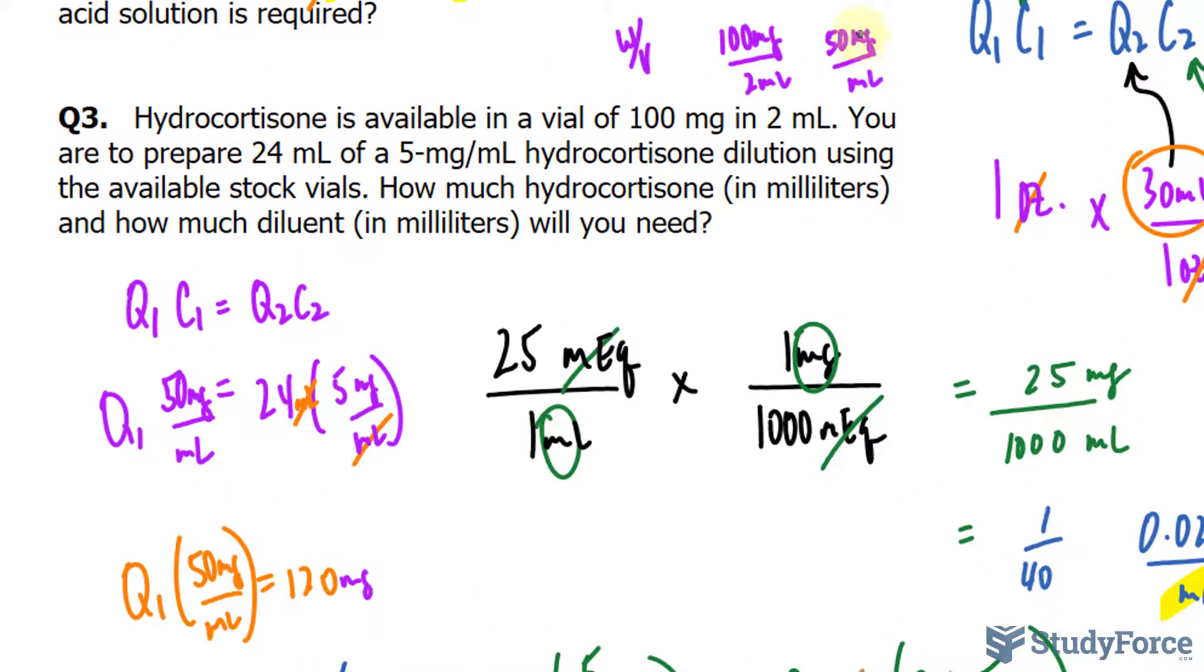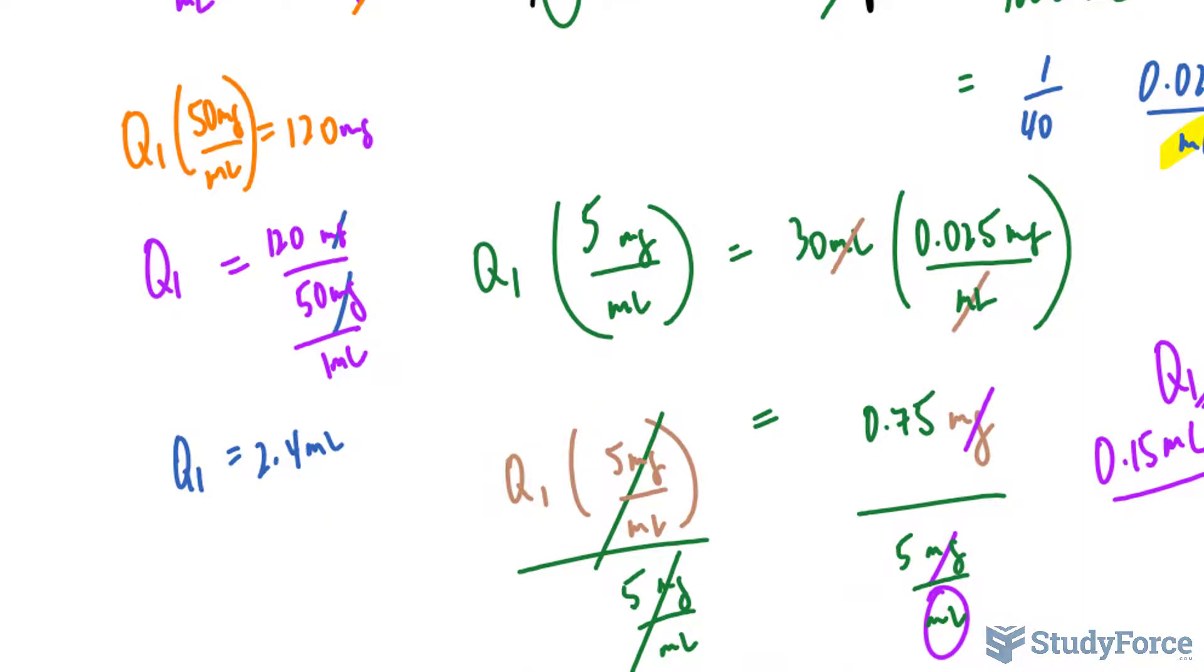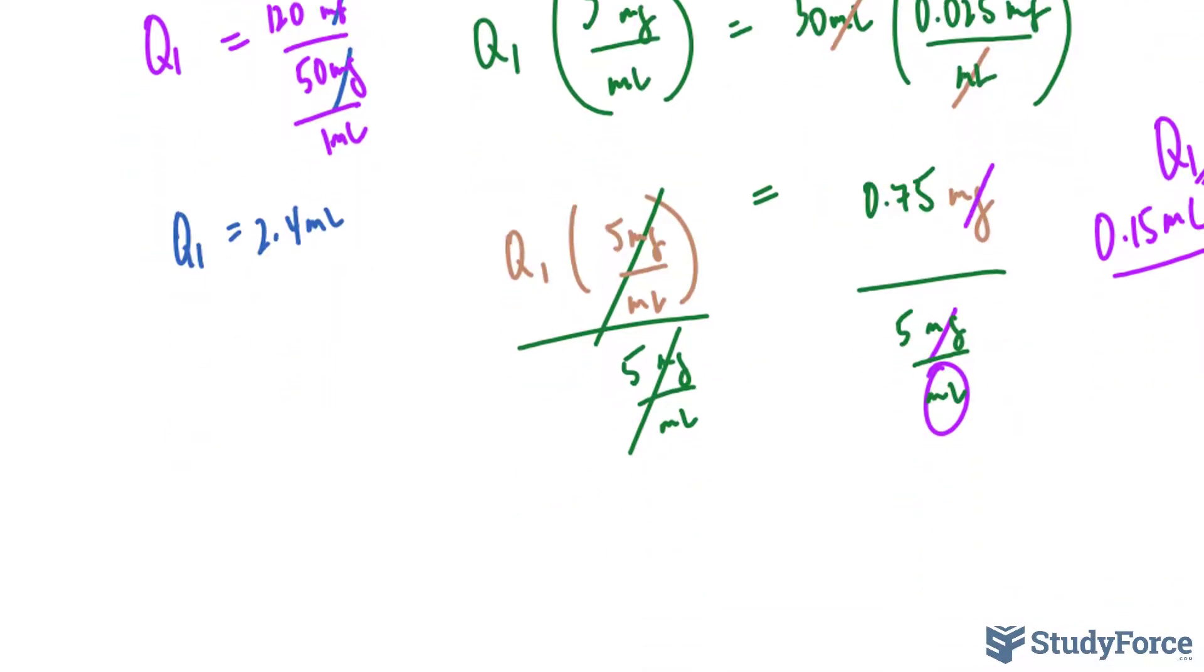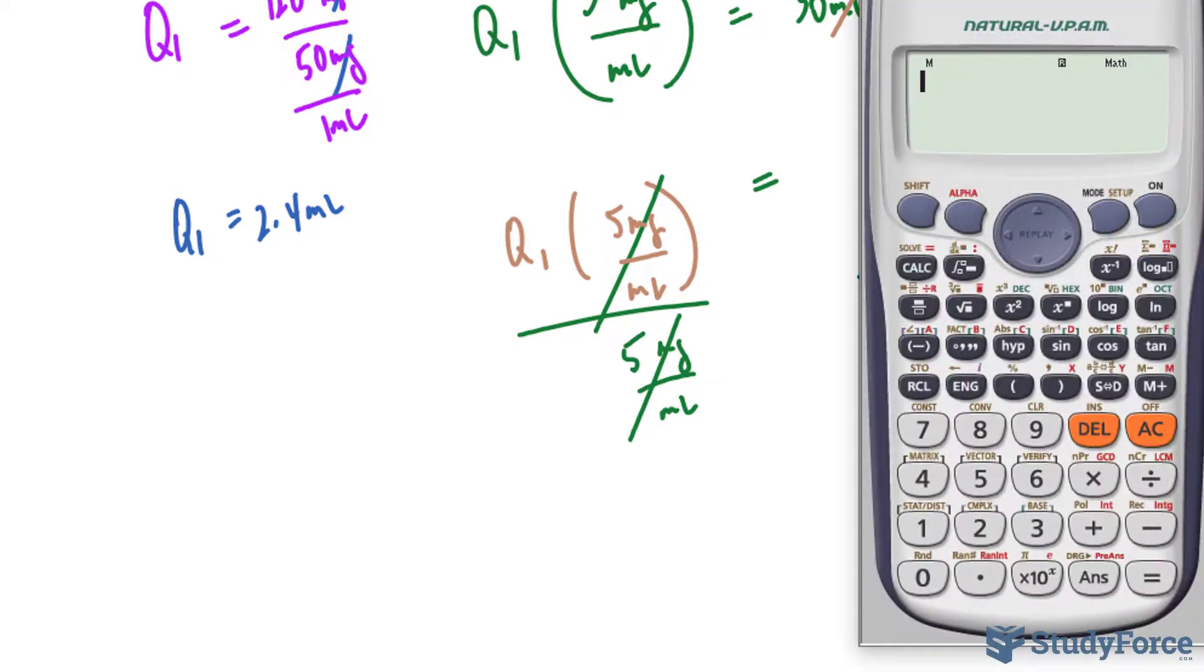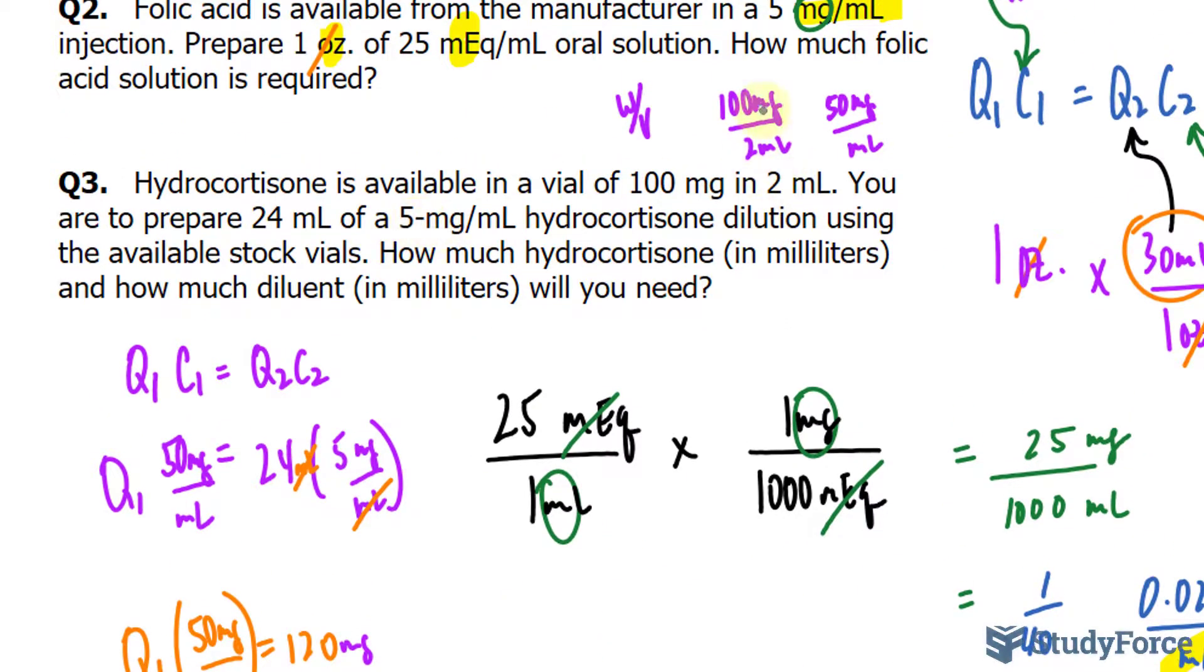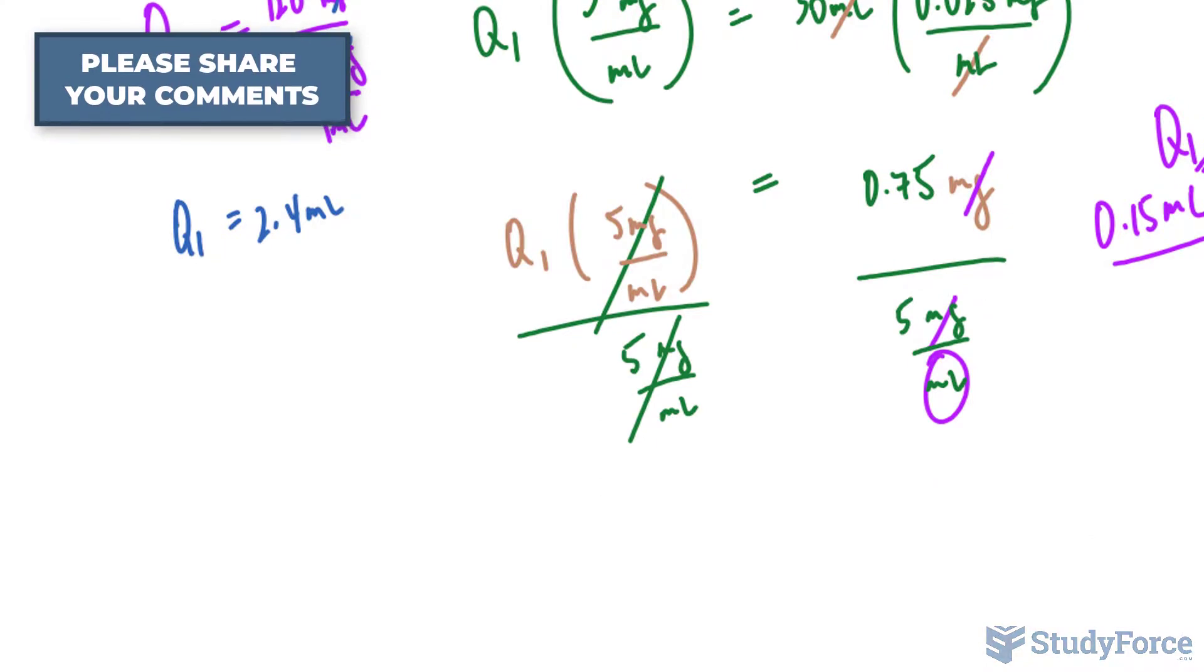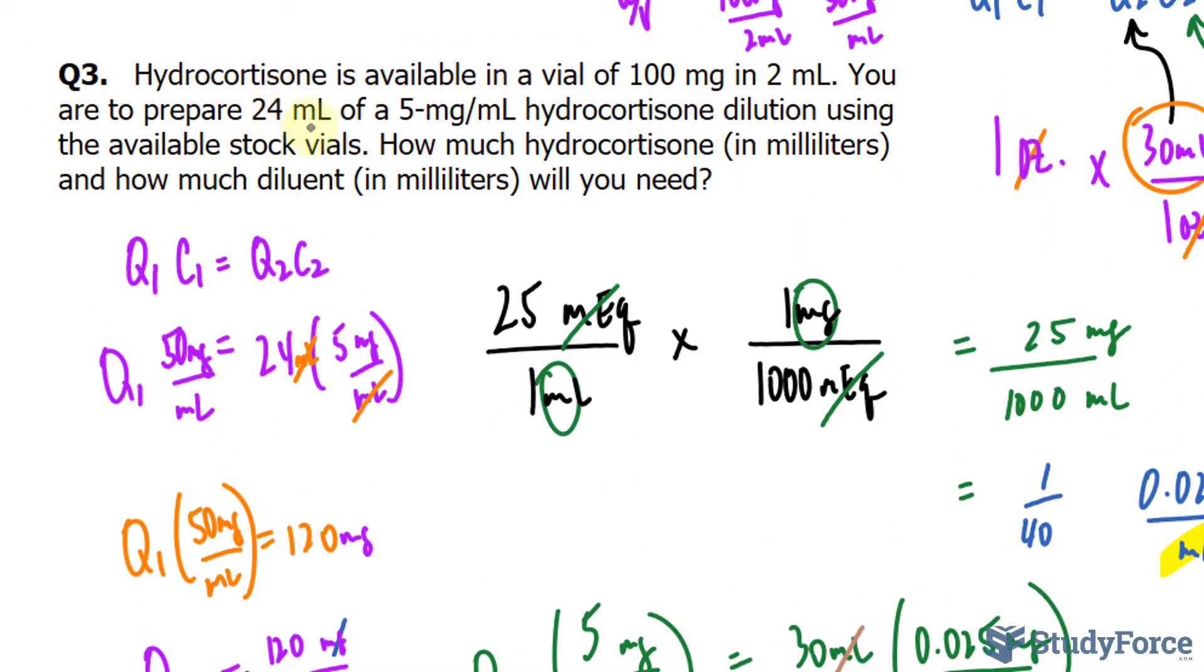Now remember, they want us to prepare 24 milliliters, and this is only 2.4 milliliters, so we need to add diluent so that it reaches 24 milliliters. To calculate that, you take the amount that you want, which is 24, and subtract it by 2.4. There's a difference of 21.6. So you'll take 2.4 milliliters at a concentration of 50 mg per milliliter, and you will add 21.6 milliliters of diluent to that to get a final solution that is 24 milliliters and has a concentration of 5 mg per milliliter.